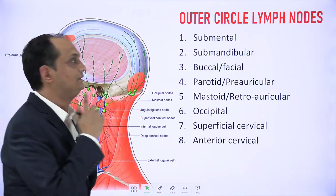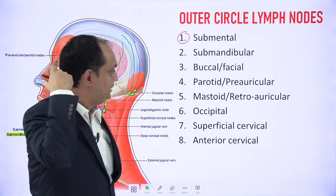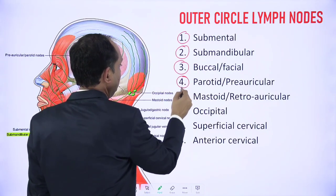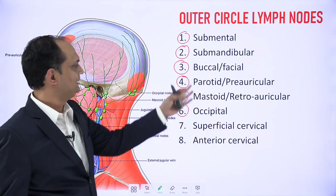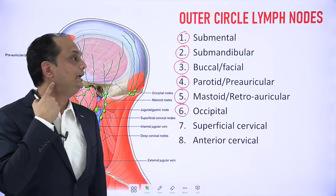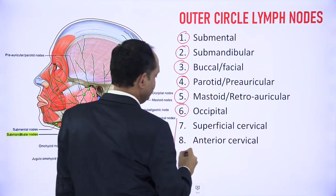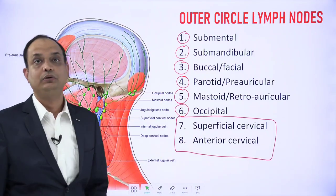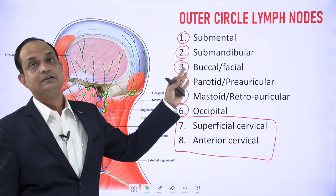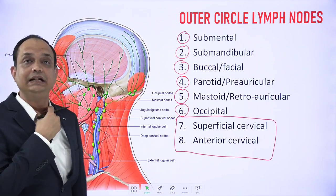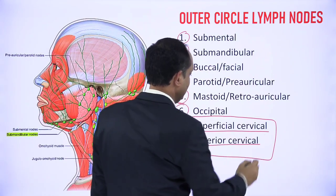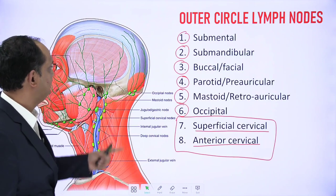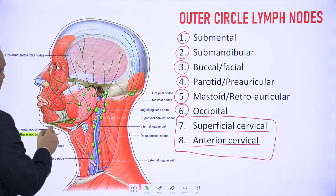The outer circle nodes are further divided on the basis of different regions: starting from the chin going posteriorly — submental, submandibular, buccal, parotid, mastoid, and occipital — these six groups are named according to their regions. Two more groups are known as detached lymph nodes, part of the outer circle that lie in the lower anterior aspect of the neck: the superficial and anterior cervical group of lymph nodes.